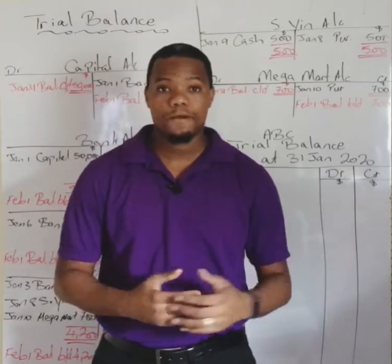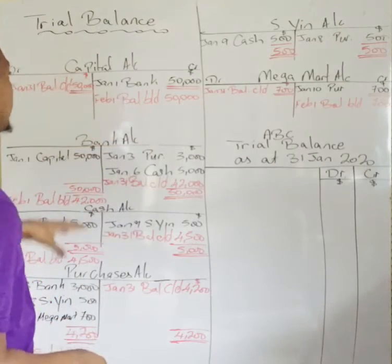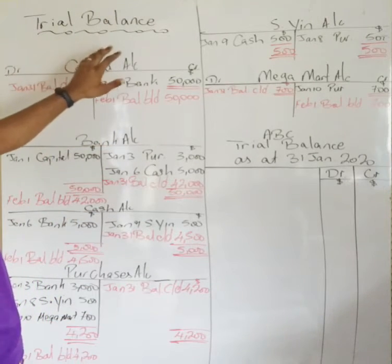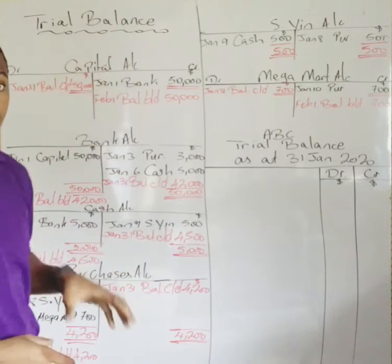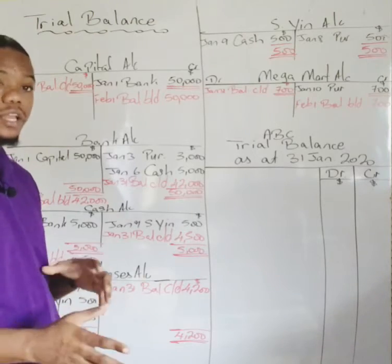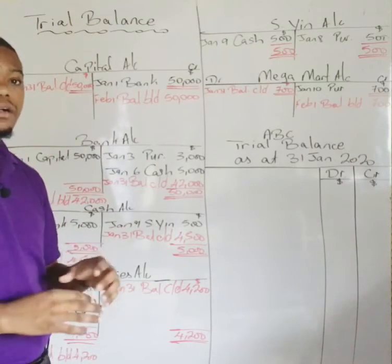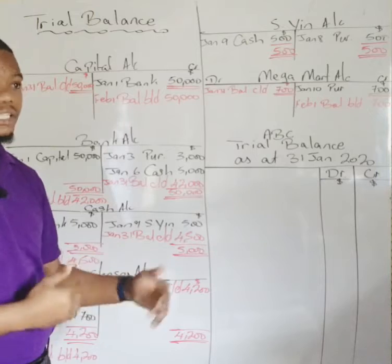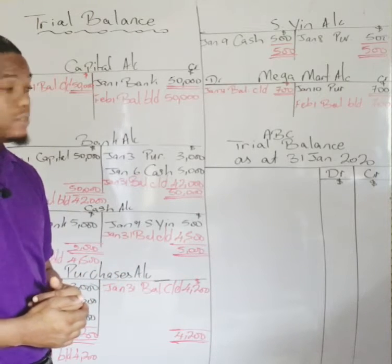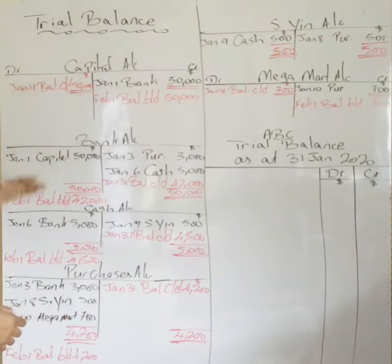If there are errors in the double entry accounts, the trial balance would pick them up — though not all errors are picked up by the trial balance. We will talk more about that in later videos.